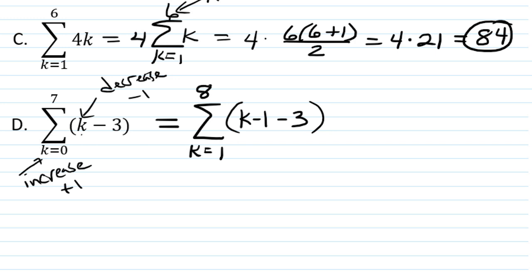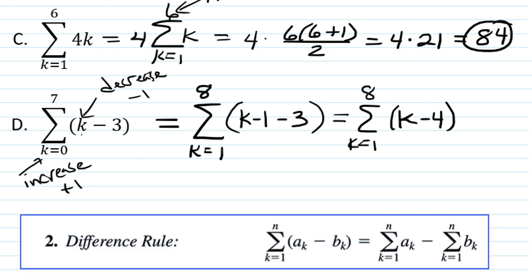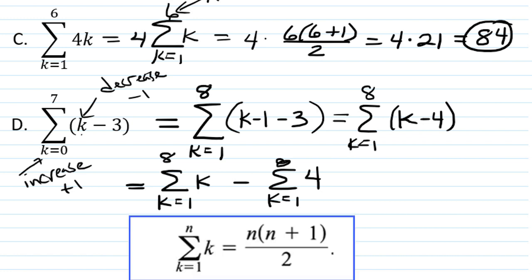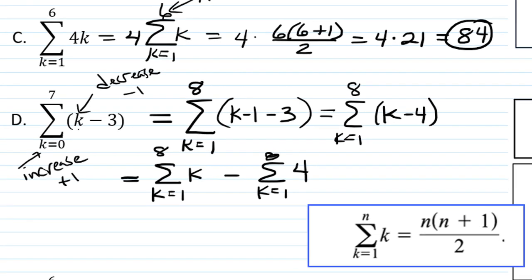Okay, so in that case, we have the sum k equals 1 to 8 of k minus 4. We have a difference, so we're going to break it apart using the difference rule. So we have the sum k equals 1 to 8 of k minus the sum k equals 1 to 8 of 4.